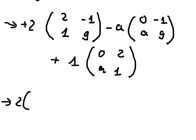So 2 times 9 is 18, minus negative 1 times 1, which is negative 1.